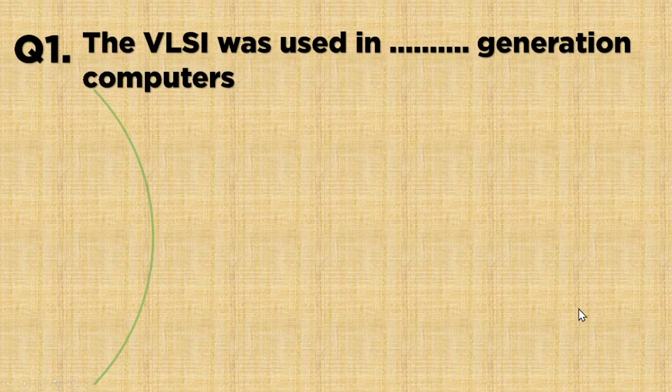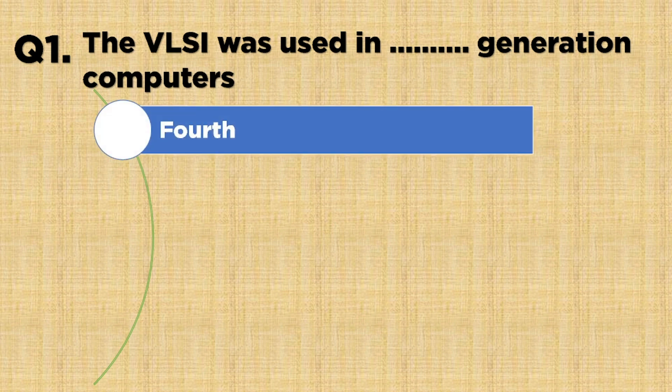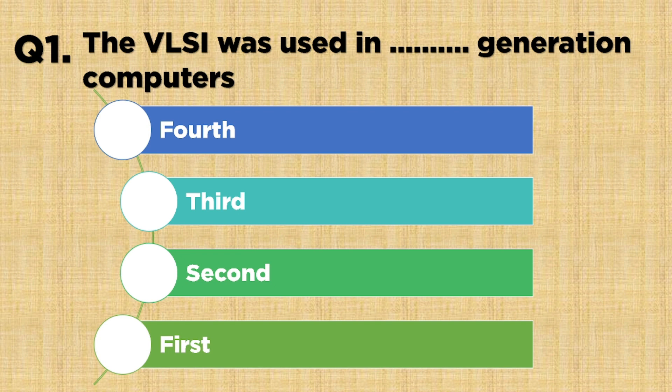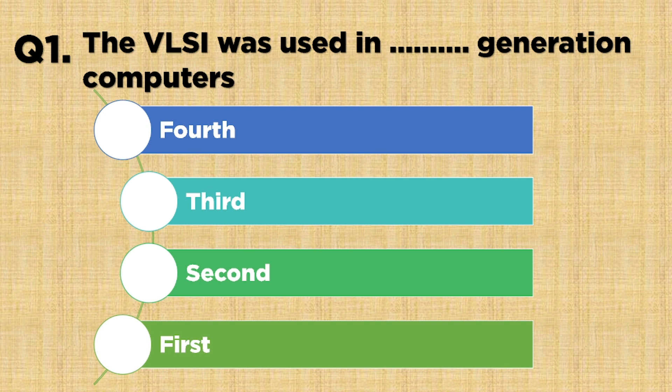The VLSI was used in which generation computers? The options are: 4th generation, 3rd generation, 2nd generation, 1st generation.